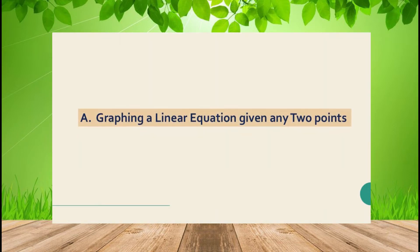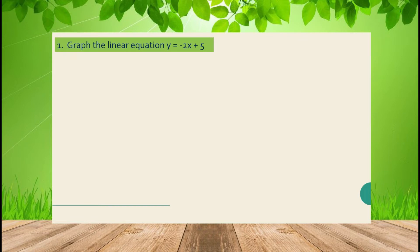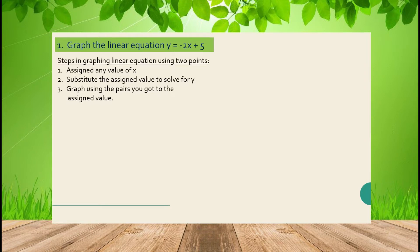Let us graph a linear equation given any two points. If we have the equation y = -2x + 5, to graph it, follow these steps: first, assign any value of x; next, substitute the assigned value to solve for y; and last, graph using the coordinate pairs you obtained.